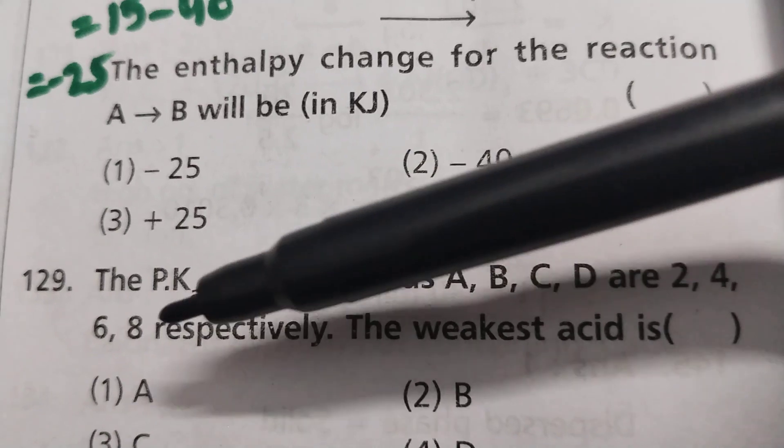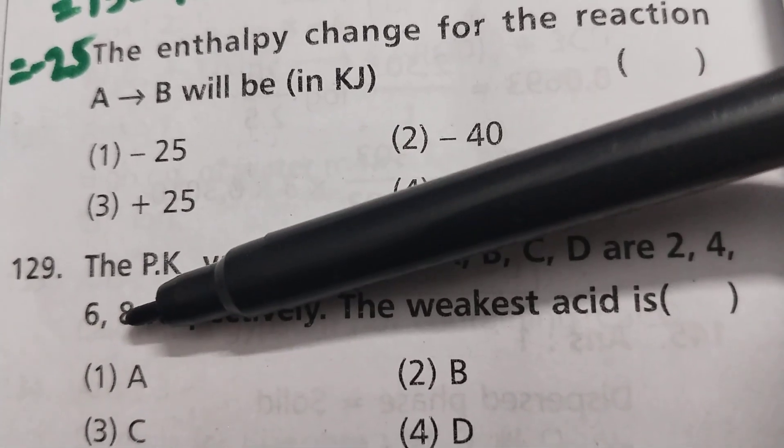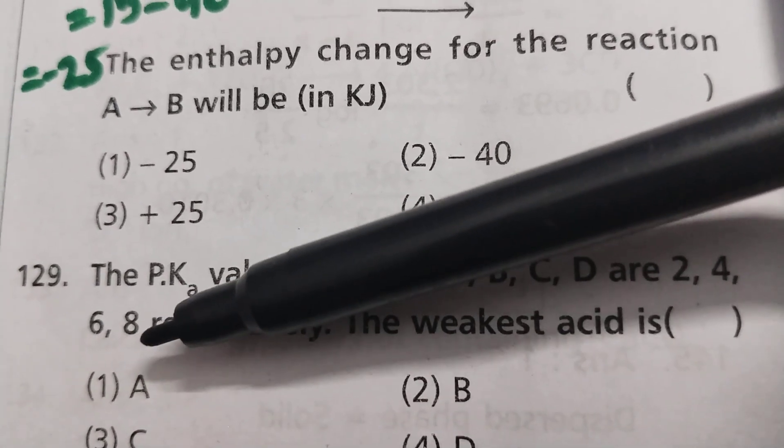Here, among A, B, C, D, D has the highest pK value. So that indicates less acidic character - that shows it's the weakest acid.